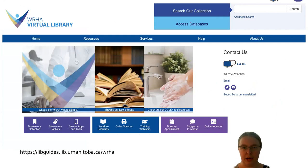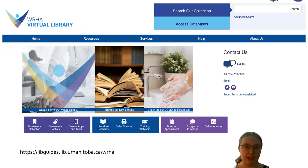This is our library website. I definitely recommend you bookmark that link — libguides.lib.umanitoba.ca/WHA. This site is where you will find all of our resources and information about the services that we offer. It's also where you'll find the cool tools and apps that we're going to be talking about today.